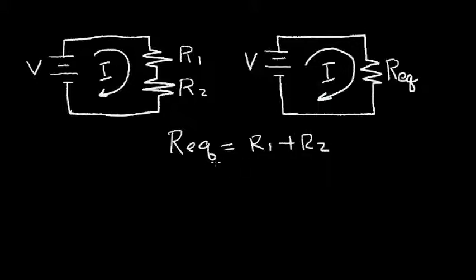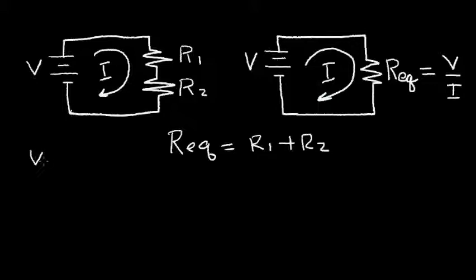Let's see if we can prove this by using Ohm's Law. We know that the equivalent resistance by Ohm's Law is the voltage divided by the current — the voltage across the resistor divided by the current through the resistor. Now on the circuit on the left side, the key concept here is the same current flows through R1 and R2. So I can calculate the voltage across R1: V1 is equal to the current times the resistor R1 by Ohm's Law.